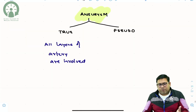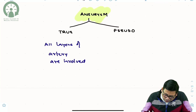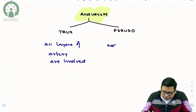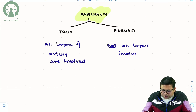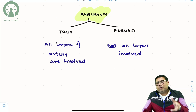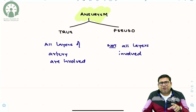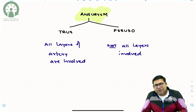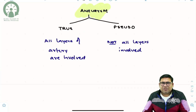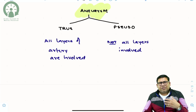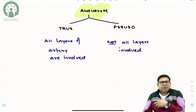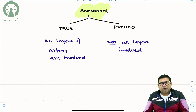In a pseudo Aneurysm, not all layers are involved. If there is an accumulation of blood in between the intima and the media, or between the media and the adventitia, that is known as a pseudo Aneurysm. Trauma, infections, and morphine are very common causes for pseudo Aneurysm.